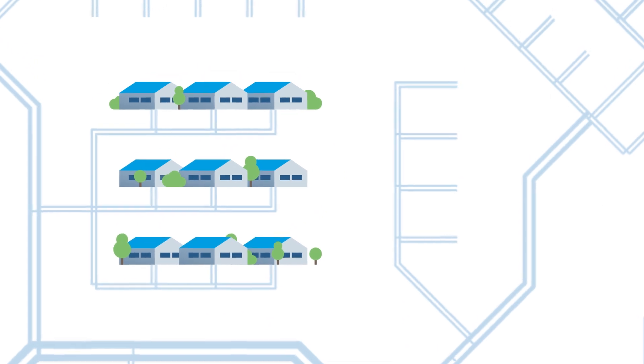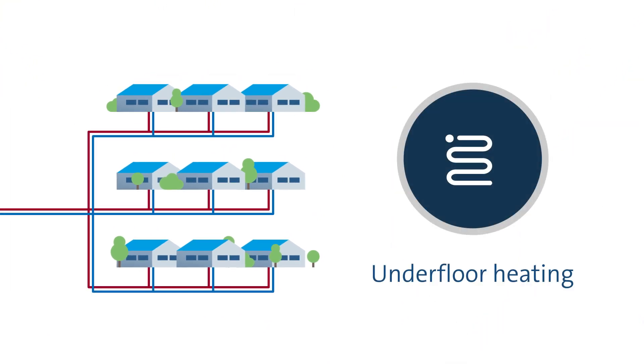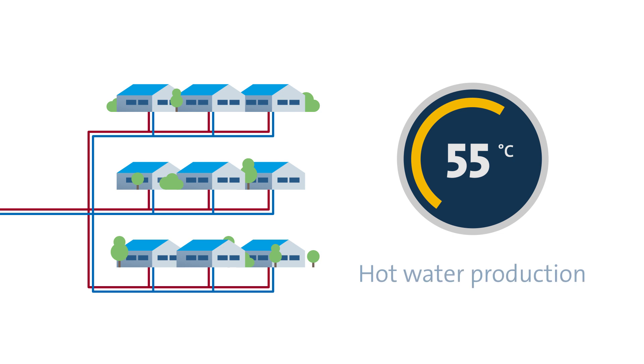In zones with houses, the hot water might only be used for underfloor heating at a temperature of 40 degrees Celsius and slightly higher at 55 degrees Celsius for hot water production.